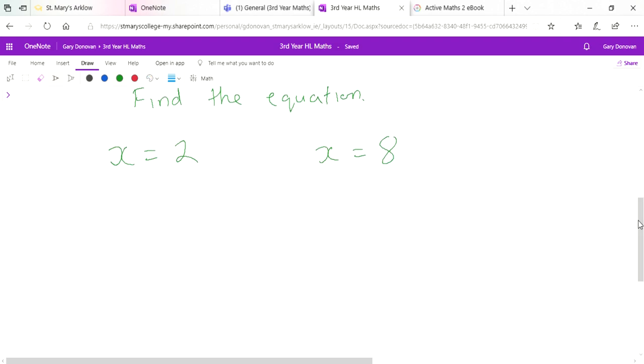So if we were working backwards, the step previous to this would be, well, if x equals 2 we'd say that x minus 2 would equal 0. And if x equals 8 we could say that, well, x minus 8 would equal 0.